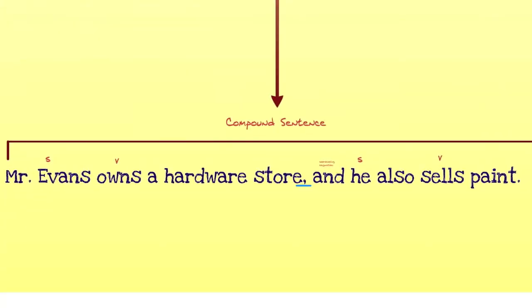To merge the two thoughts together, you drop the period and replace it with a comma, as you can see underlined in blue.